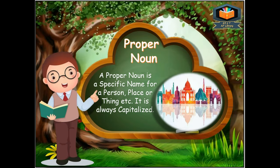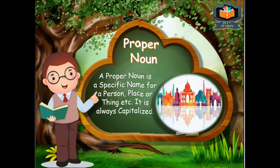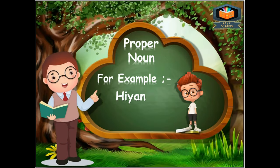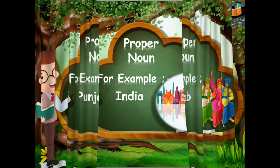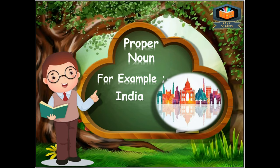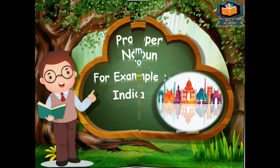The second kind is proper noun. A proper noun is a specific name for a person, place, or thing, etc. It is always capitalized — we always start a proper noun with a capital letter — because these are the specific names for any person or place. For example: Hyaan is the name of a boy, Punjab is the name of a state, India is the specific name of a country.